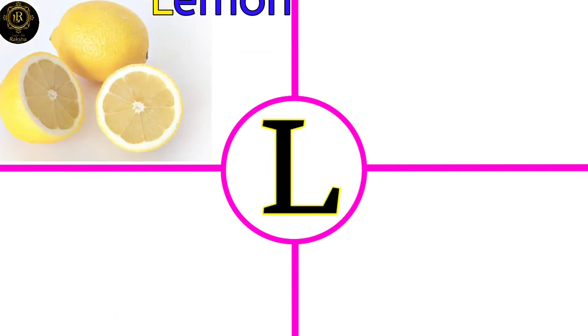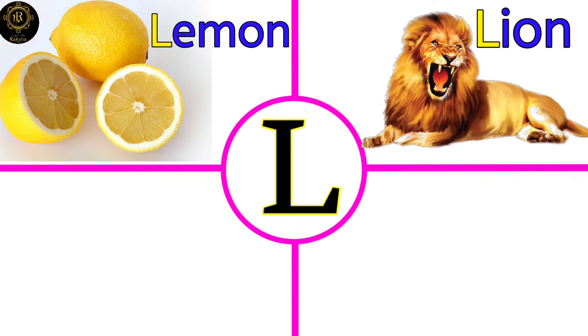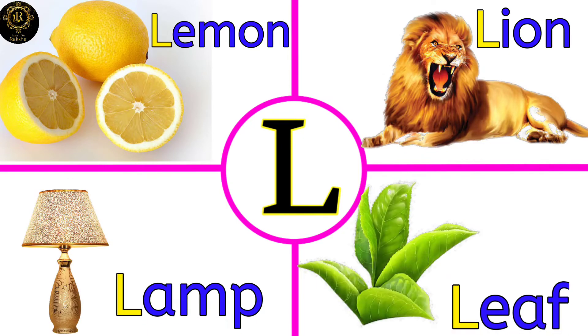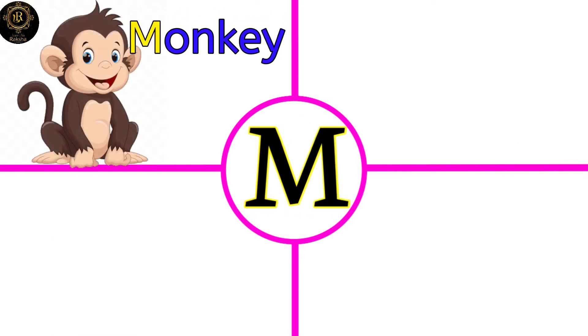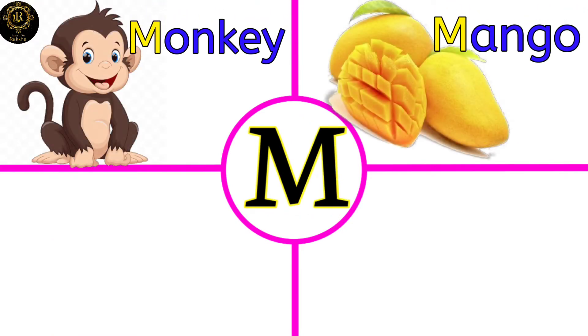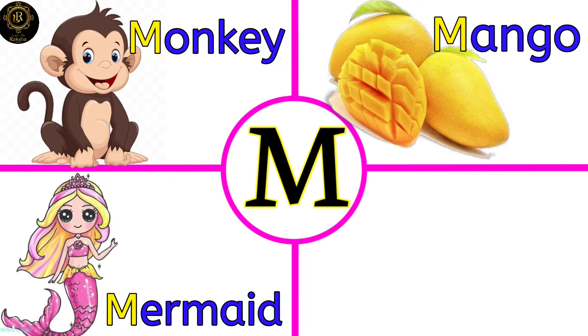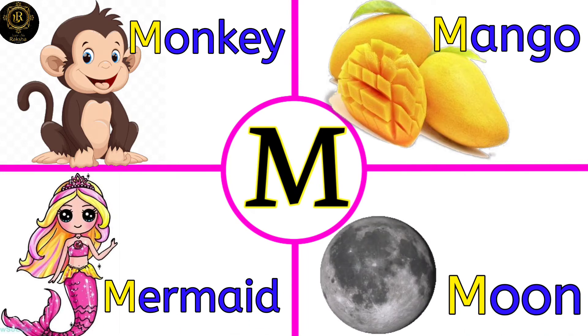L for Lemon, Lion, Lamp, Leaf. M for Monkey, Mango, Mermaid, Moon.